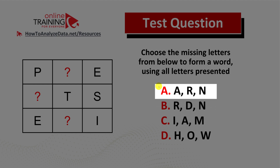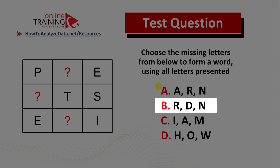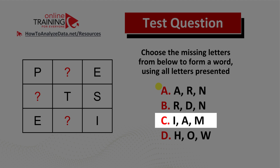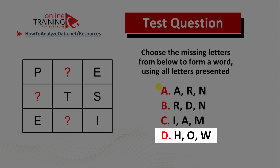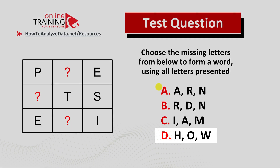Choice A: A-R-N. Choice B: R-D-N. Choice C: I-A-M. And choice D: H-O-W. Do you think you know the answer? Now might be a good time to pause this video to see if you can come up with the solution on your own.